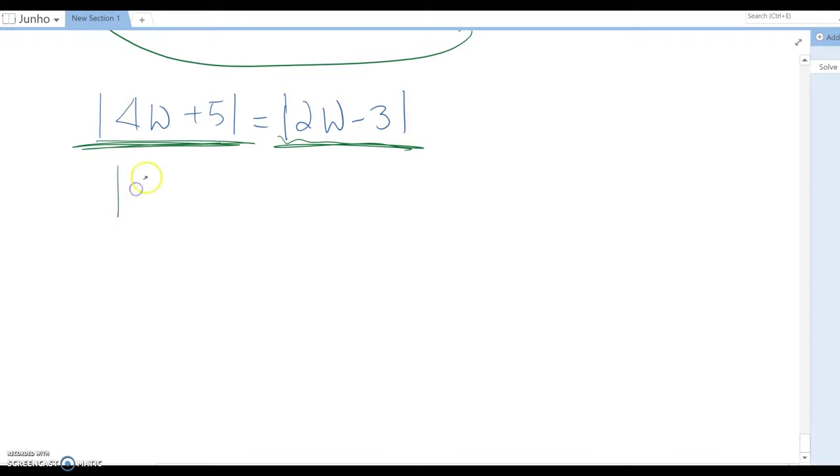Then this becomes |4w + 5| = 2w - 3. The reason we can do this way is because in this case, we can generate four different equation patterns.